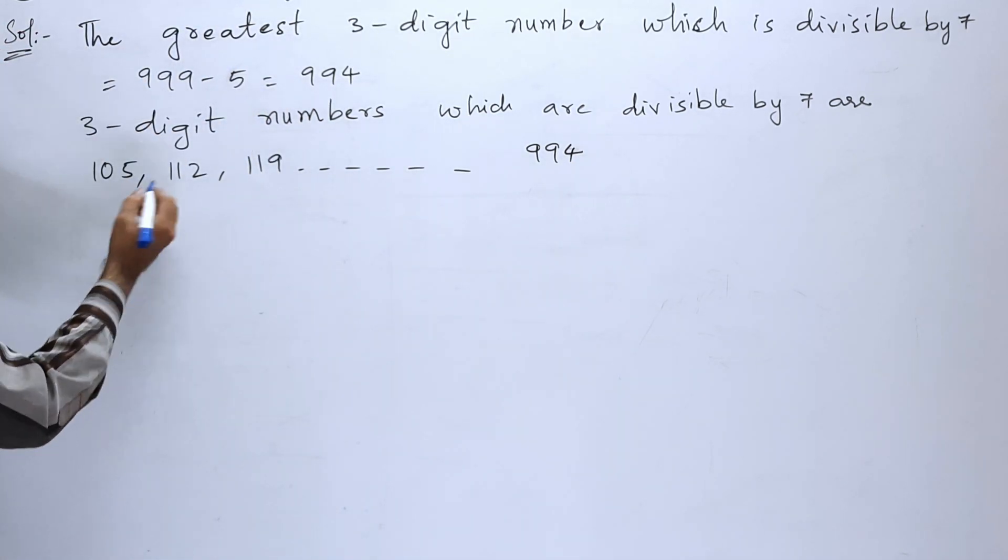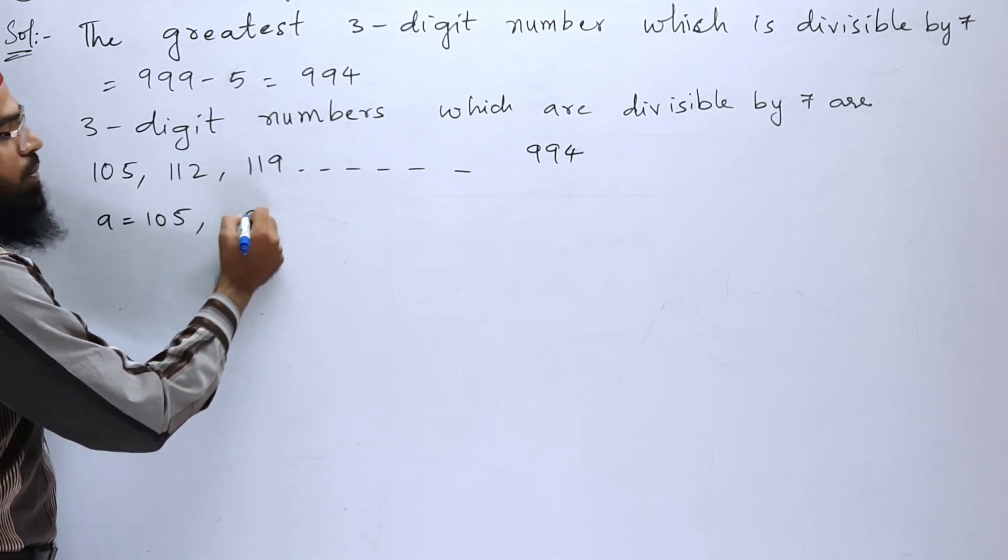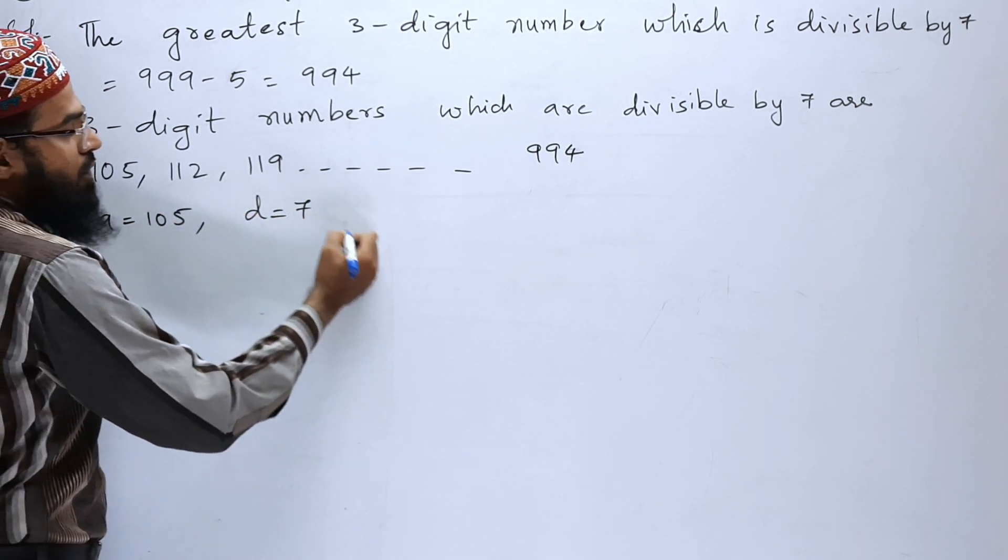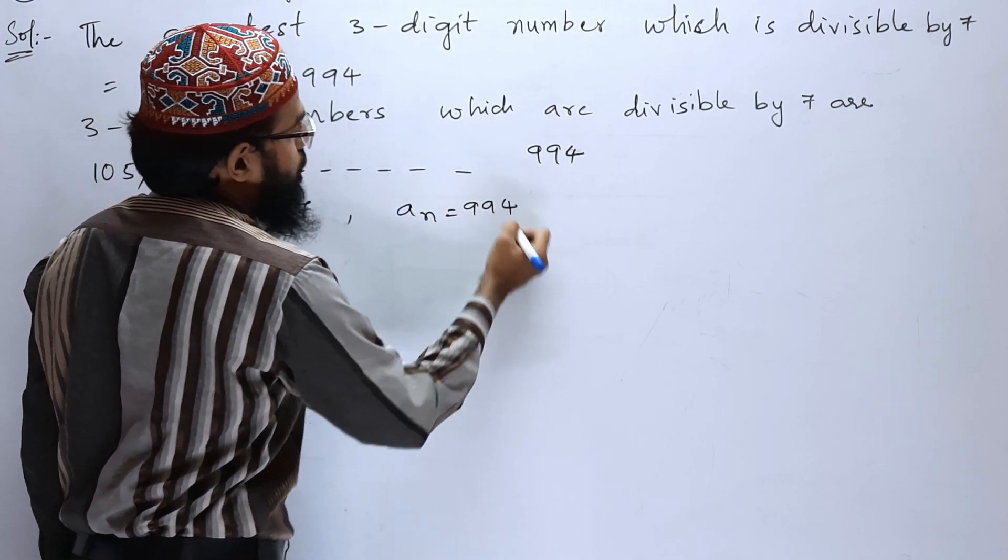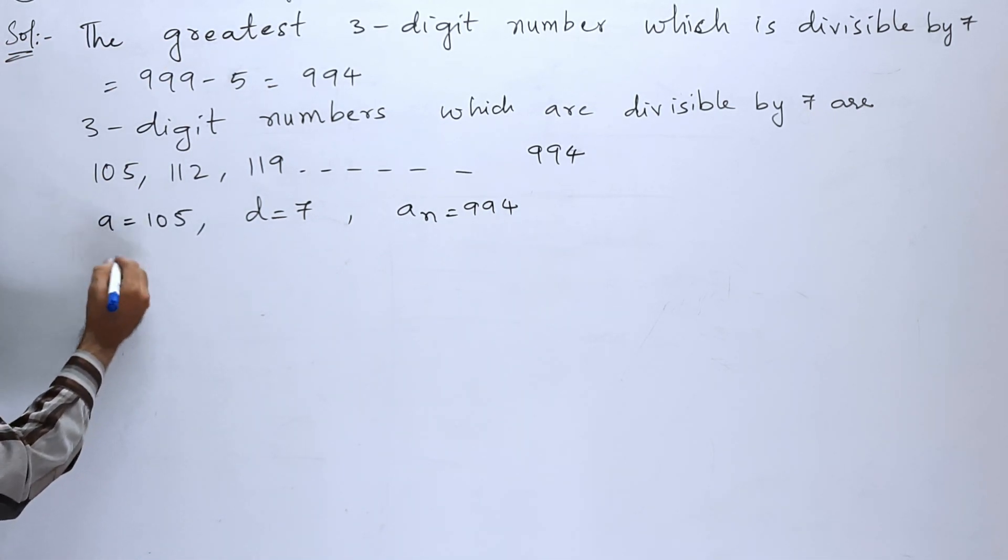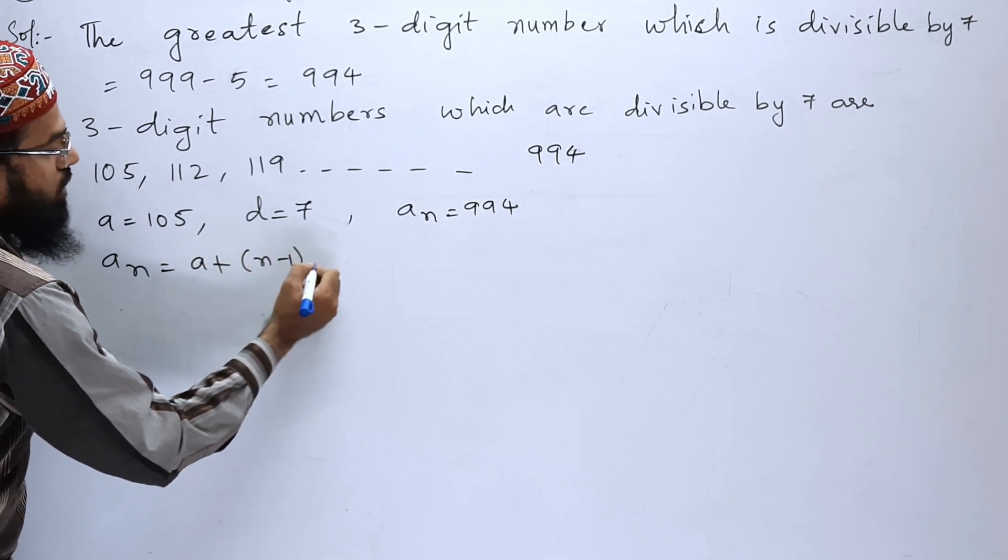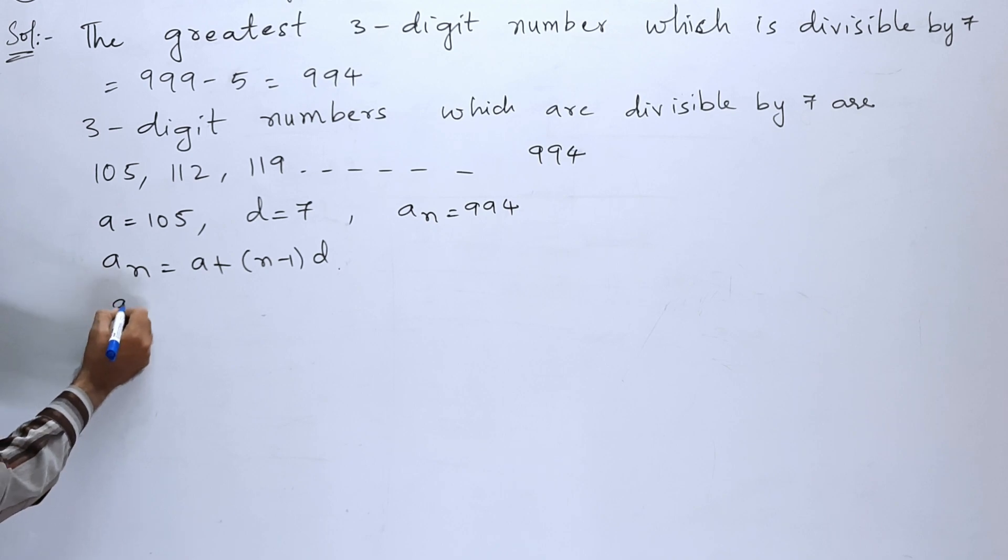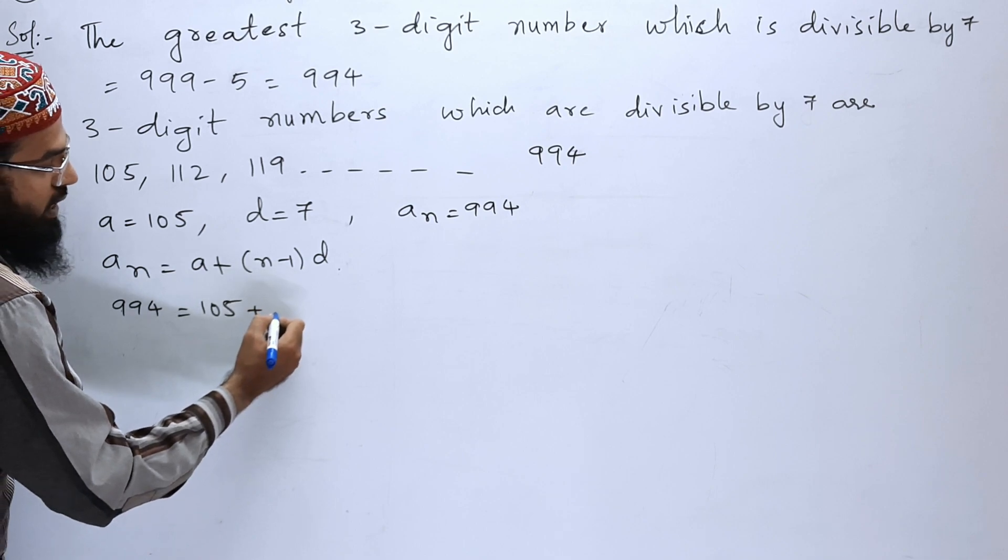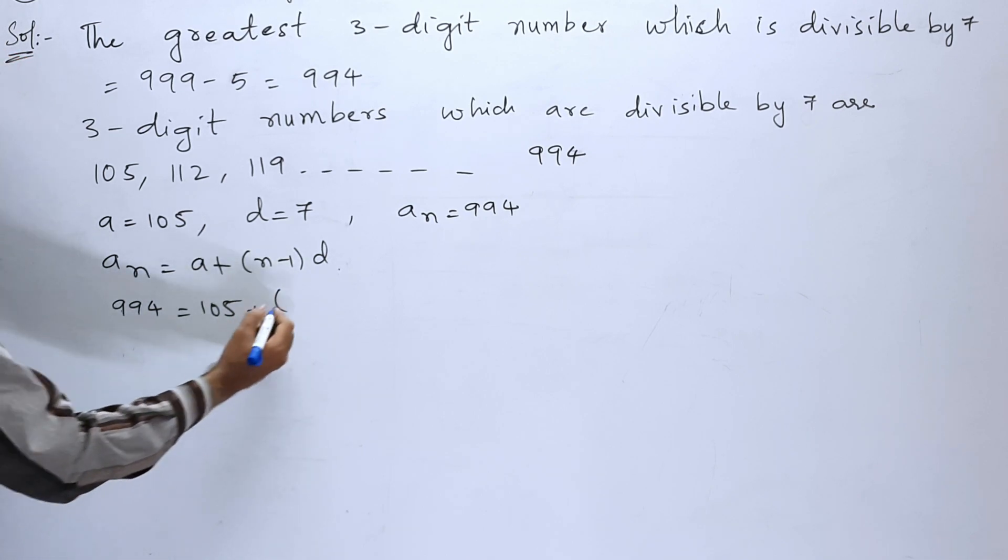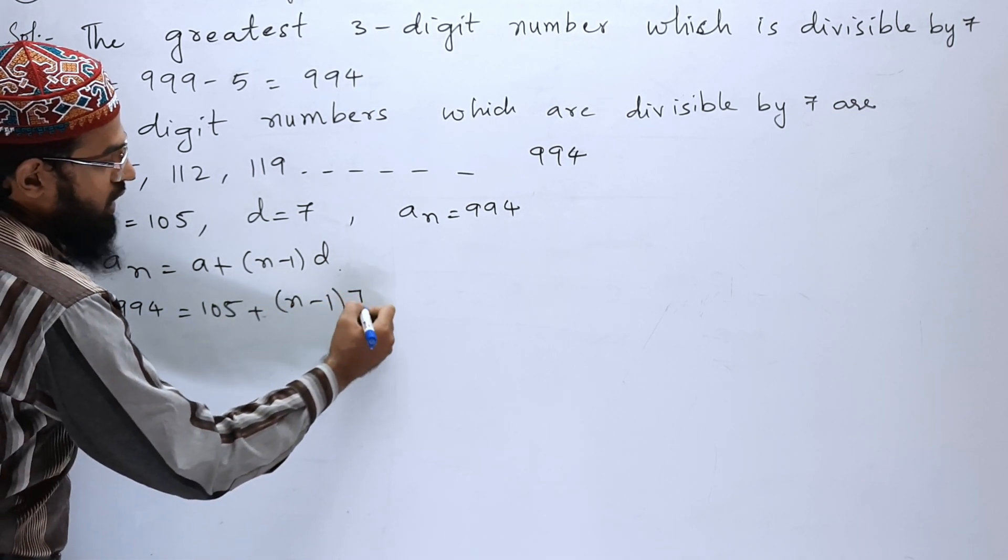So here you can see the first term is 105 and the common difference is 7 and the last term, that is a_n, is equal to 994. Now let us write the nth term formula: a_n is equal to a plus (n-1) times d. So a_n is 994 is equal to a is 105 plus (n-1), and we have to find how many 3-digit numbers are there, that's n. d is 7.